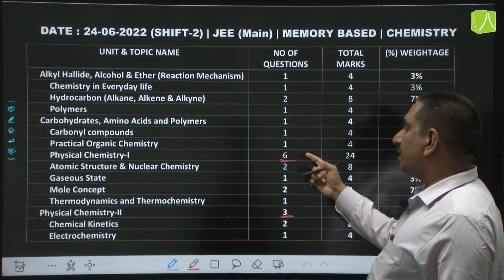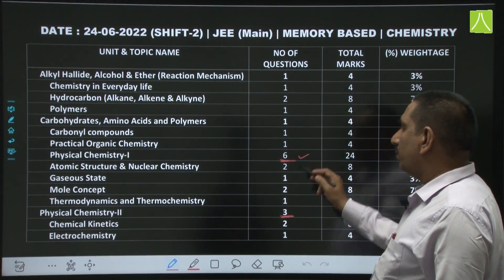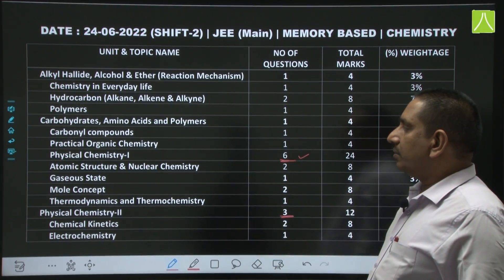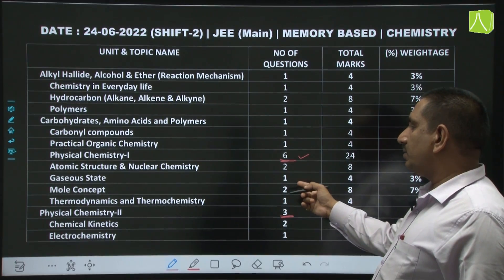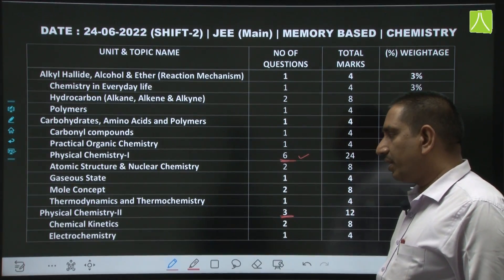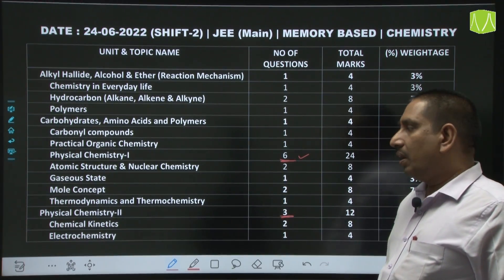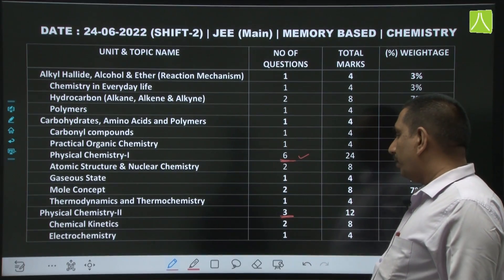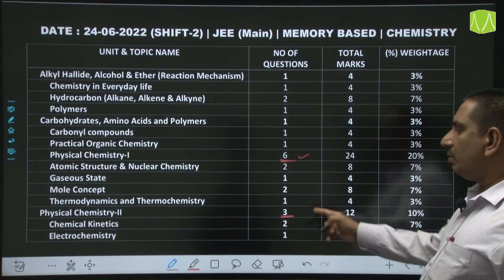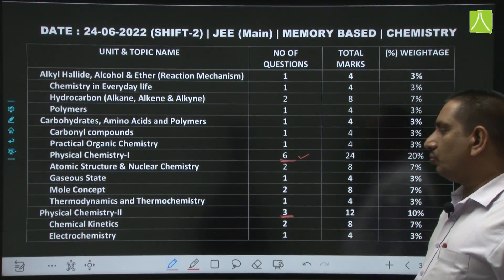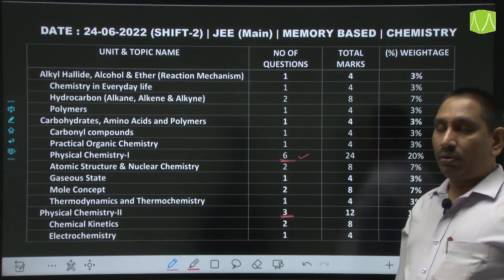Physical chemistry from 11th gives 6 questions: from atomic structure and nuclear chemistry 2 questions, from gaseous state 1 question, from mole concept 2 questions, and from thermodynamics and thermochemistry 1 question came. Physical chemistry part 2 — that is 12th physical chemistry — gives 3 questions: 2 questions from chemical kinetics and 1 question from electrochemistry.